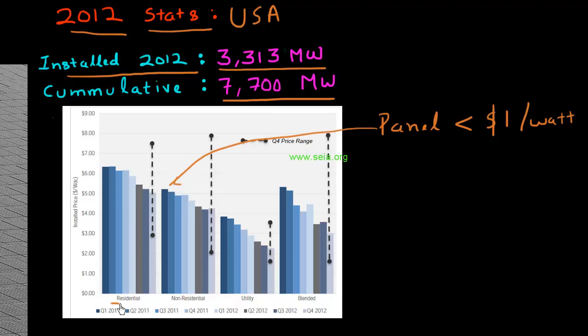It varies depending upon the application. If somebody has to install it on a home in a residential application, the install cost is much higher compared to a utility scale solar plant where the install cost is much lower. The total install cost in utility scale is approaching close to $2 per watt. We have come a long way from that original number of $300 per watt just for the panel, to now the panel costing less than a dollar per watt.